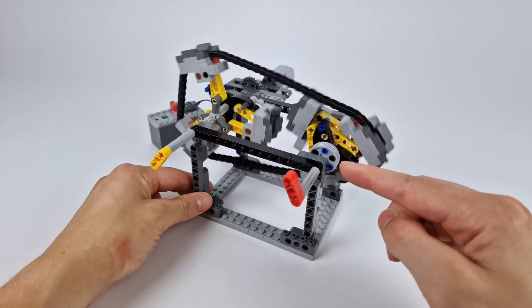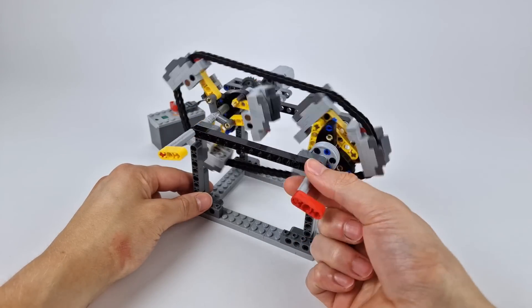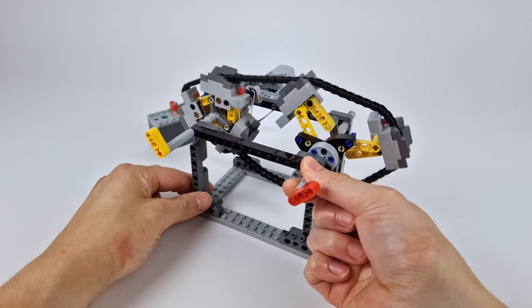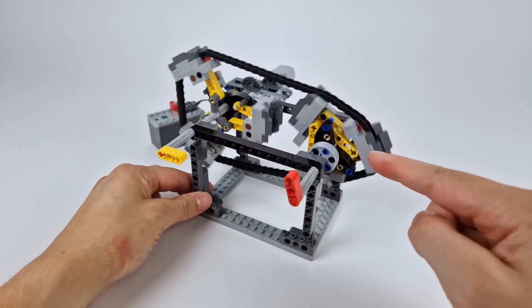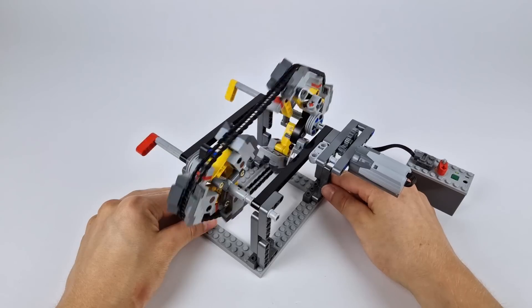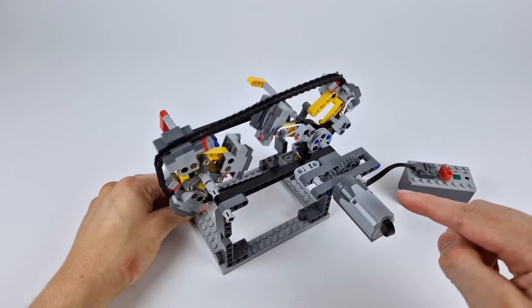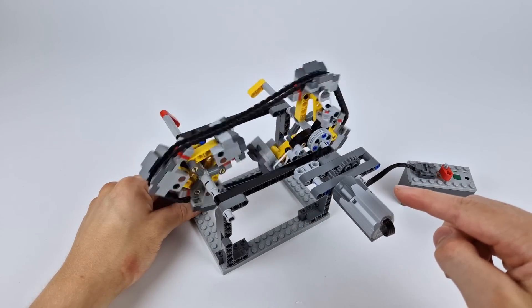But how do we know that the output torque has actually increased? We can see that the output speed is lower, but this could just mean that power is being wasted somewhere in the mechanism. And if the output torque is in fact increasing, how do we know that the motor isn't just having to work harder to provide it?